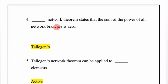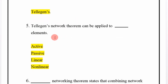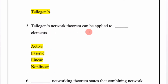Tellegen's network theorem states that the sum of the power of all network branches is zero. This theorem can be applied to active, passive, linear, and nonlinear elements.